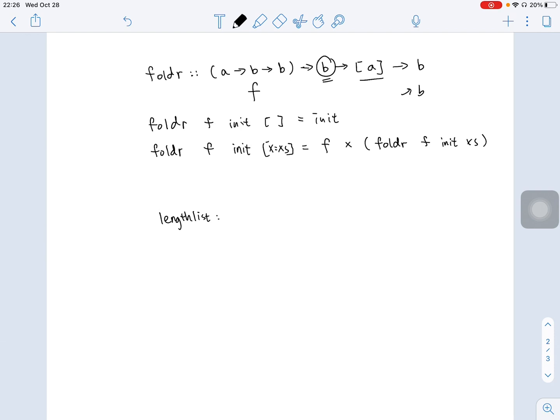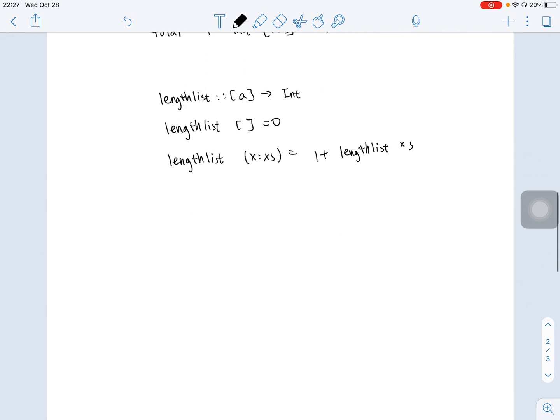Before, LensList is defined using recursive calls, and it would have a definition like this. LensList of empty list would give us 0, and then LensList of xs is 1 plus LensList of xs.